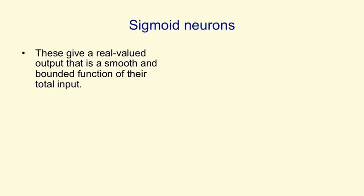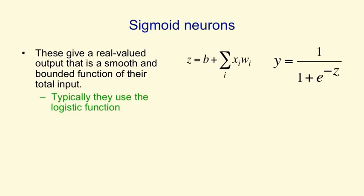The neurons that we'll use a lot in this course, and are probably the commonest kinds of neurons to use in artificial neural nets, are sigmoid neurons. They give a real-valued output that is a smooth and bounded function of their total input. It's typical to use the logistic function, where the total input is computed as before, as a bias plus what comes in on the input lines weighted. The output for a logistic neuron is 1 over 1 plus e to the minus the total input.